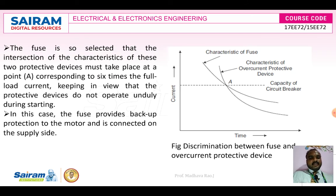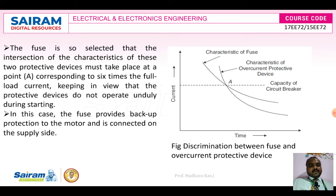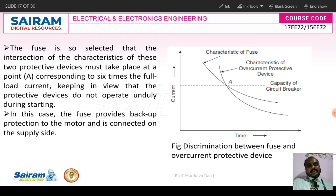We can observe the characteristics of those two fuses in the diagram. Both fuses operate at point A. The x-axis represents time and the y-axis represents current. When the current value is more, the operating time of the fuse is less. As the current value decreases, the operating time of the fuse will be increased — this is the inverse characteristic of a fuse.